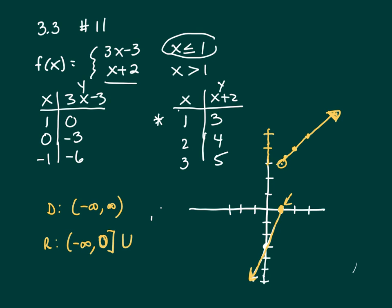Union. Now we need to do this upper piece that starts at what y value there? That's 3 and goes to positive infinity. So that's your range.